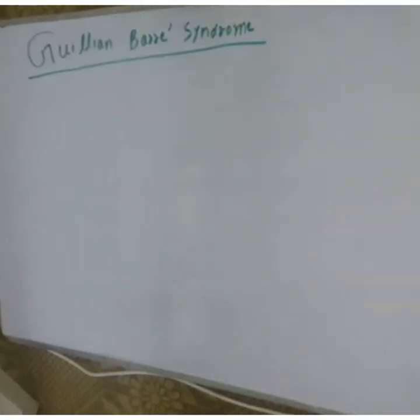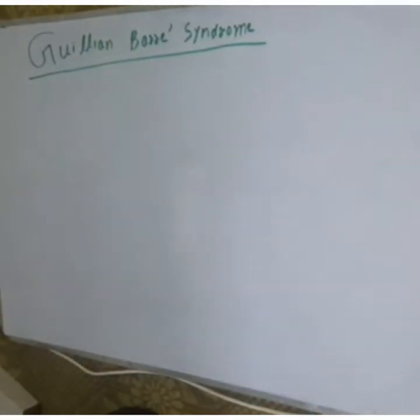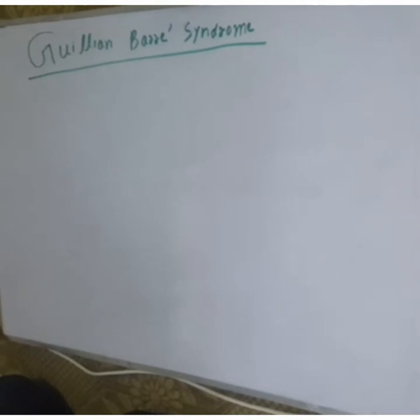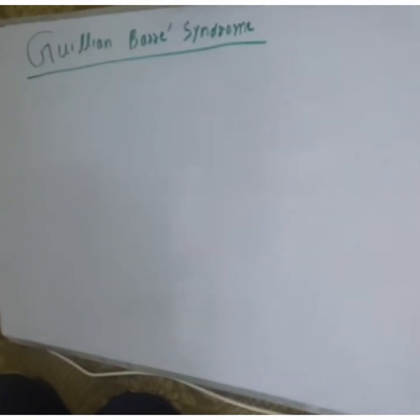We are discussing Guillain-Barré syndrome. There are three types of Guillain-Barré syndrome. The first type is acute inflammatory demyelinating polyneuropathy.